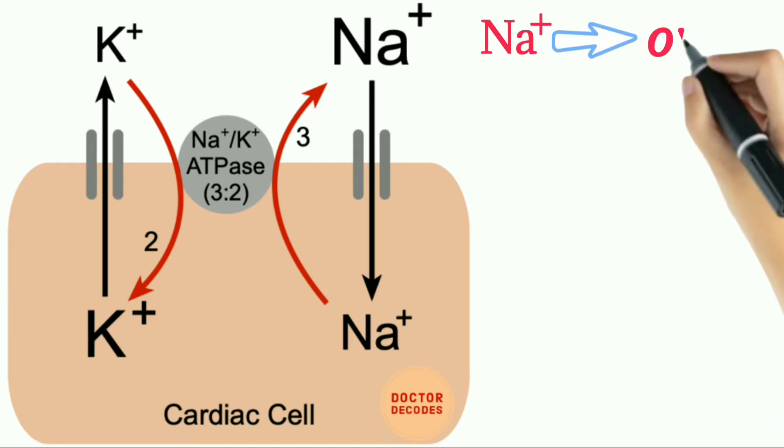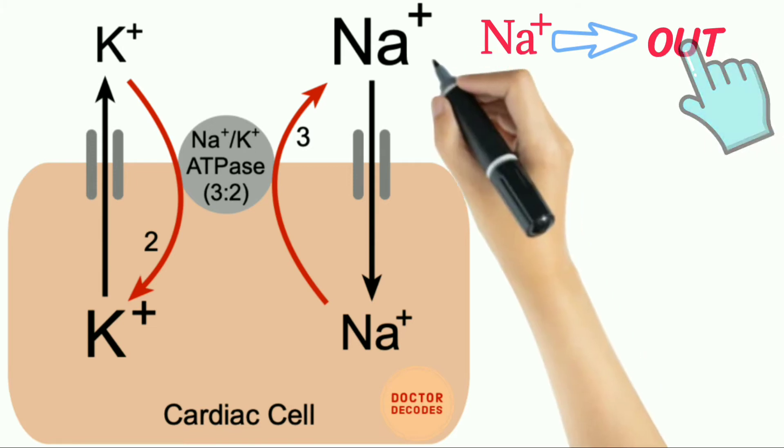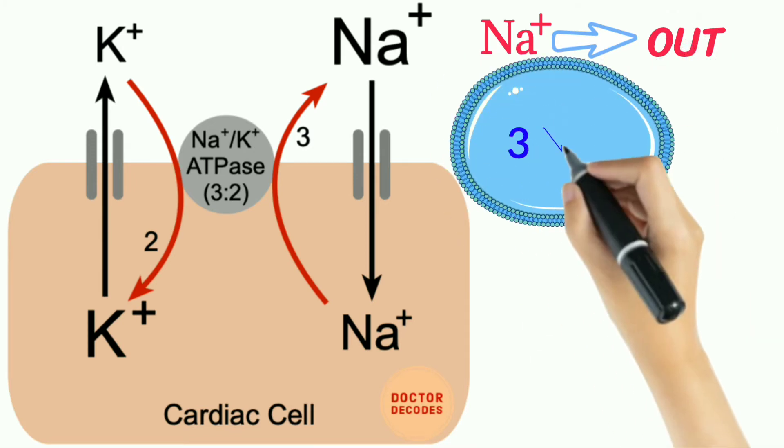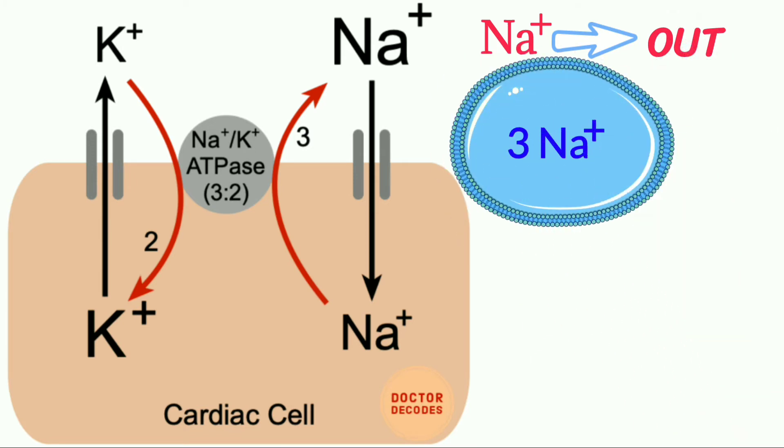Note that sodium goes out and the word out has three characters. In this way you can easily remember that three sodium cations exit the cell.